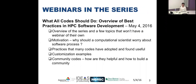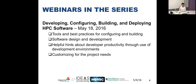The webinars in the series: today's webinar is an overview and introduction providing motivation as to why a computational scientist should worry about software process, the practices many codes have adopted, examples of customizations, and discussion of community codes. The next webinar, two weeks from today, will be given by Barry Smith on developing, configuring, building, and deploying HPC software — tools and best practices for configuration and building, basic principles of software design, and helpful hints for developer productivity.